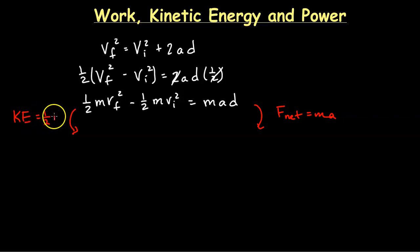So kinetic energy is 1 over 2MV squared. And so on the left-hand side, we have the final kinetic energy minus the initial kinetic energy equal to the F net times the displacement. So the force times the displacement is equal to the change in kinetic energy of an object. And kinetic energy, we can think of that as the energy of motion. We can also write this as delta KE is equal to work.